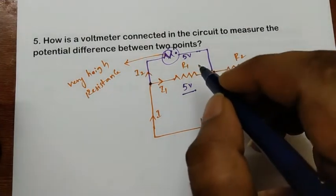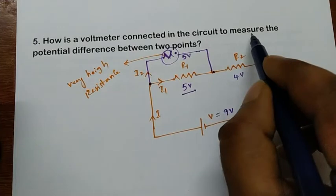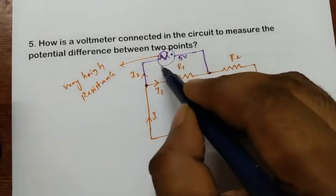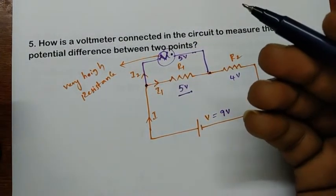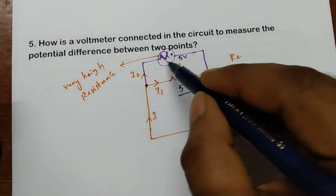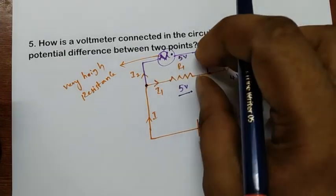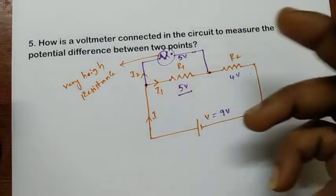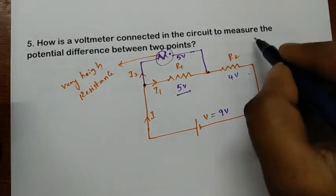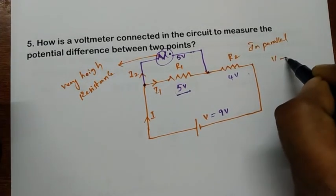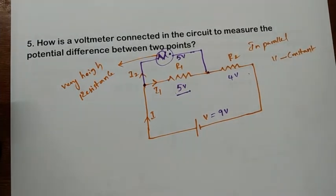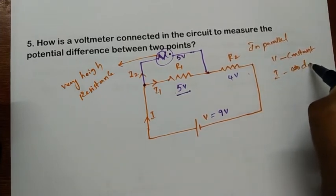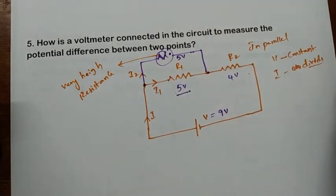So to summarize: the voltmeter is connected in parallel in the circuit. The reasons are: first, the voltmeter has very high resistance, so it allows only a least amount of current; and second, when connected in parallel, whatever voltage drop is across the component, the same voltage drop will appear across the voltmeter. In parallel, voltage V is constant, and current divides according to Kirchhoff's Current Law.